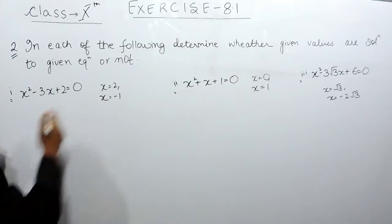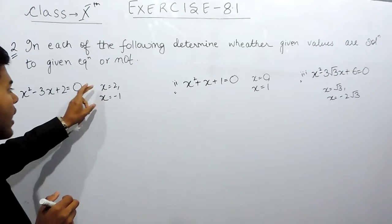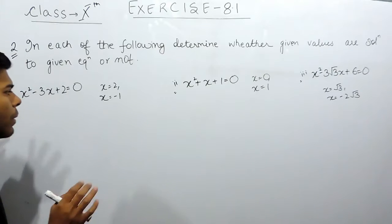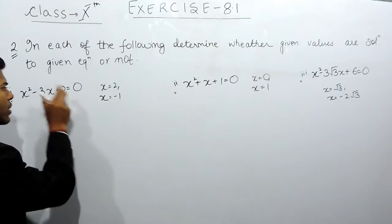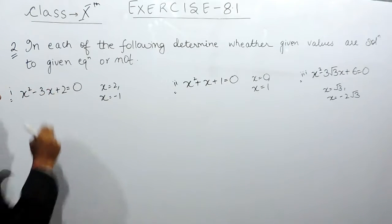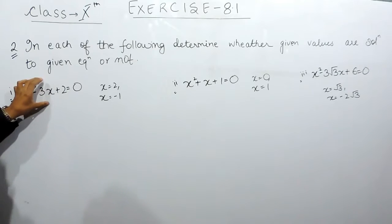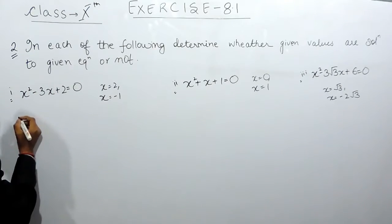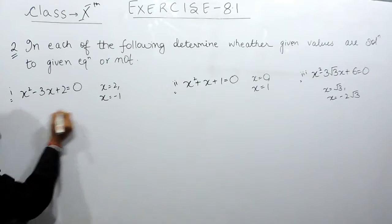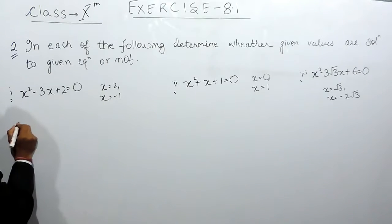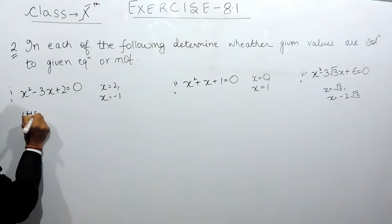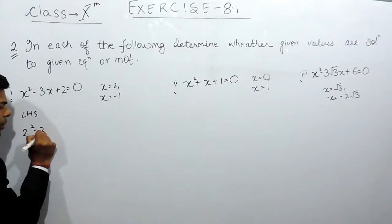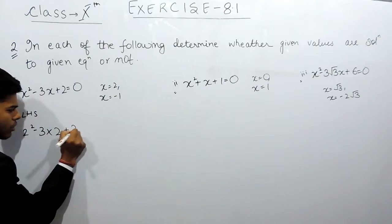In the first part, as we have to only check whether these values are part of the quadratic equation or not, we will directly substitute these values in this equation and we will check whether left hand side is equal to right hand side or not. First of all, on keeping x equals to 2,